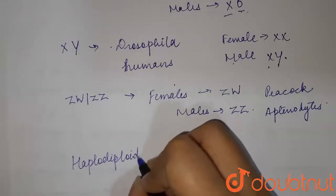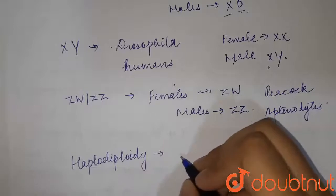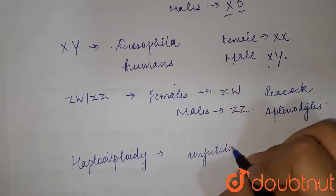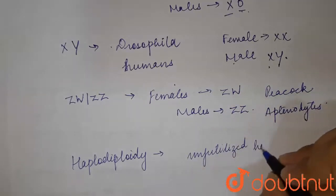Haplodiploidy: this type of sex determination is seen in unfertilized haploid eggs.